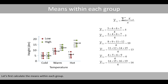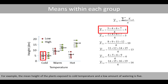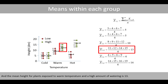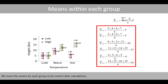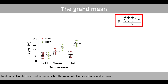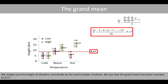Let's first calculate the means within each group. For example, the mean height of the plants exposed to cold temperature and a low amount of watering is 5. And the mean height for the plants exposed to warm temperature and a high amount of watering is 13. We'll store the means for each group to be used in later calculations. Next, we calculate the grand mean, which is the mean of all observations in all groups. We simply sum the height of all plants and divide by the total number of plants. The grand mean has been rounded to 9.17.